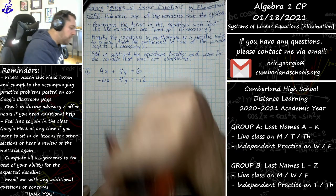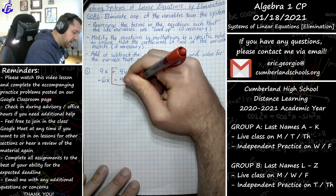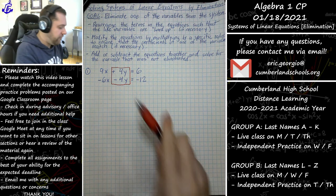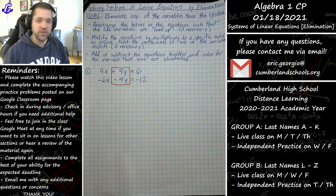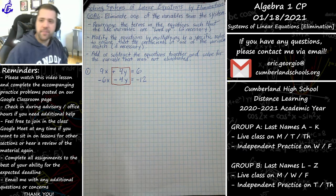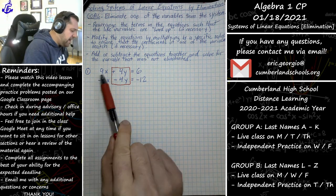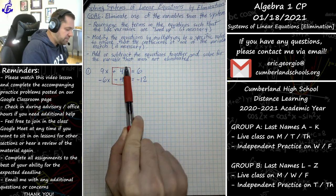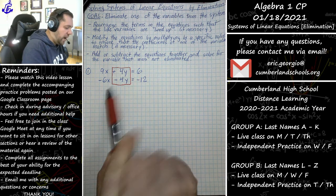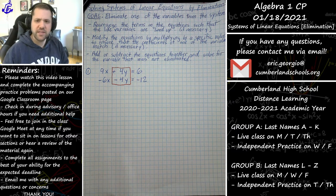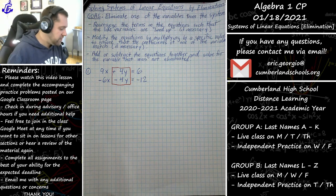Now, what should catch your eye is this: in the first equation we have a positive 4y, and in the second equation we have a negative 4y. These coefficients match — we see 4 and 4 — one's positive and one's negative. So if I take the first equation and add the second equation to it, literally doing this plus this, the y's would cancel out and I'd be left with just x equaling some value that I can solve.